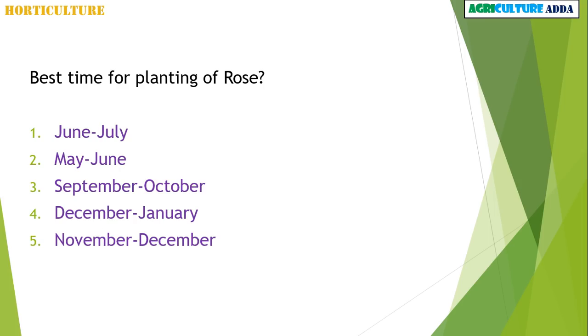What is the best time for planting of rose? June–July, May–June, September–October, December–January, or November–December? The answer is October.